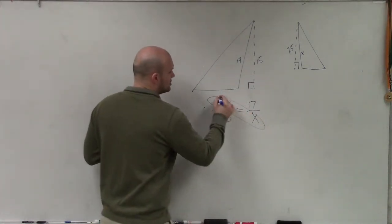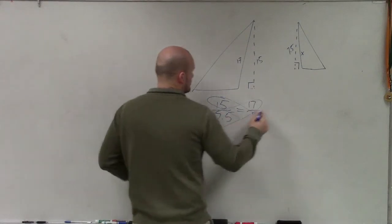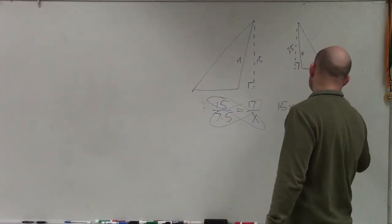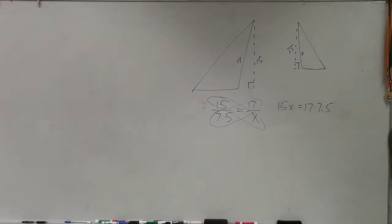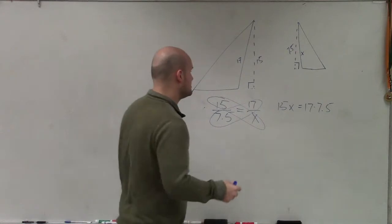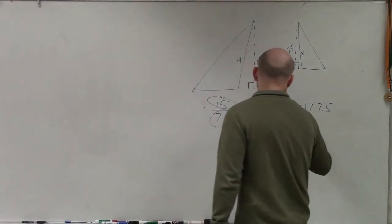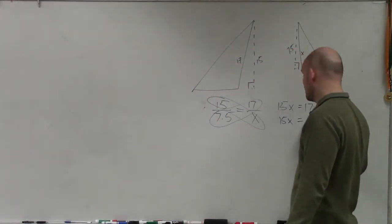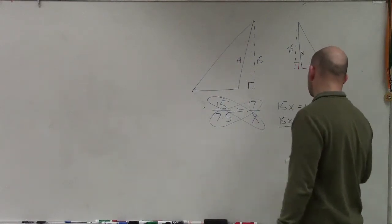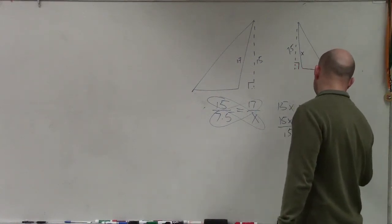So now I cross multiply. So I have 15 times x equals 17 times 7.5. Now, I do not know 17 times 7.5, so I'll type it. 15x equals what? 127.5. And then divide by 15 equals 8.5.